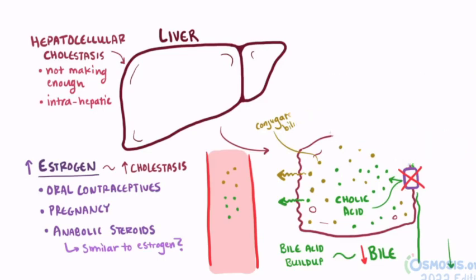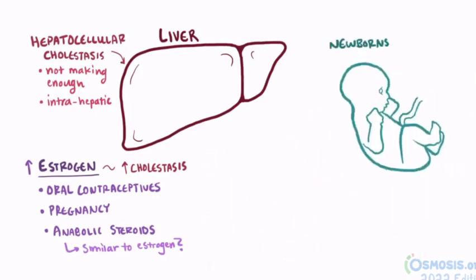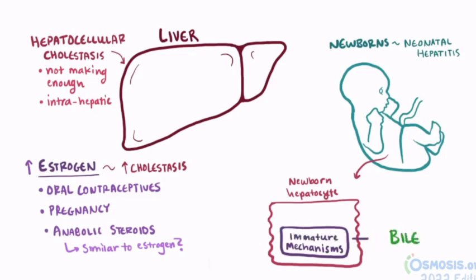Another hepatocellular mechanism for cholestasis is related to newborns and is associated with neonatal hepatitis. In newborns, it's thought that several of the important mechanisms that help produce bile in hepatocytes are relatively immature, leading to an overall decreased ability to produce bile. This, in combination with the developing liver being more sensitive to injury, can lead to a reduction in bile synthesis and bile flow for newborns.